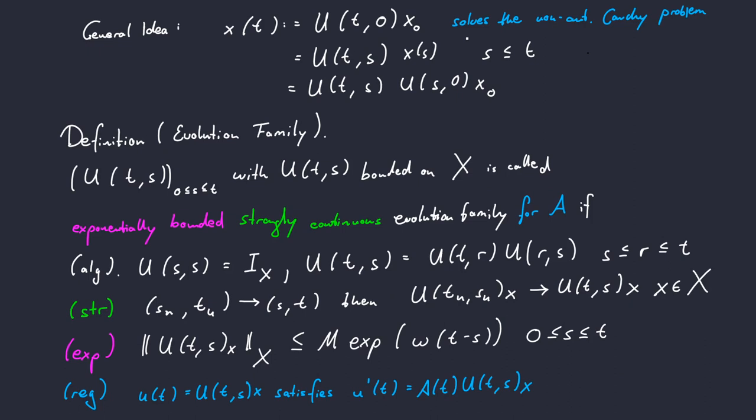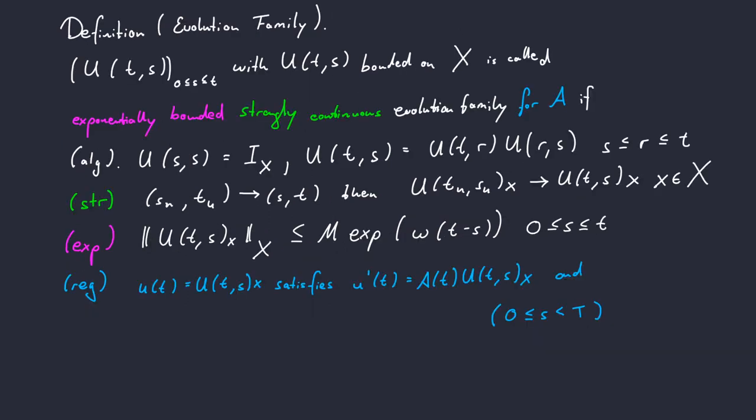The last part of the definition takes care of the interpretation of an evolution family as a solution operator to our Cauchy problem. Namely, when we define our solution like this via our evolution family, we want it to be differentiable in some suitable sense and to solve the original Cauchy problem coming from the family of operators A(t). We now want the following regularity property for our solution. Namely that as a function of time, we want u of this variable to lay first in a Sobolev space, which now explains in which sense we want to talk about the differentiability, on the interval from s to t with values in our Banach space X.